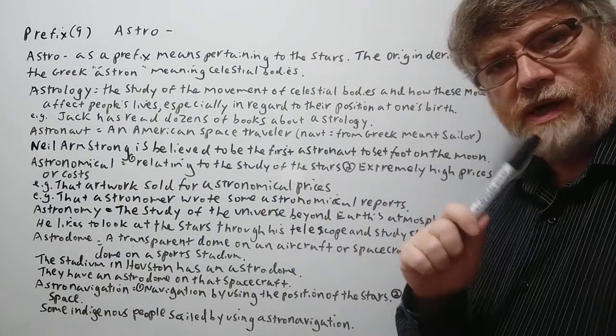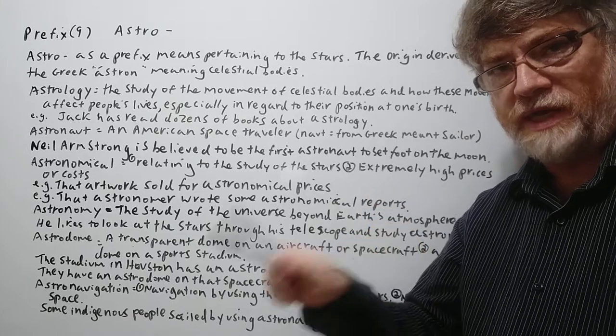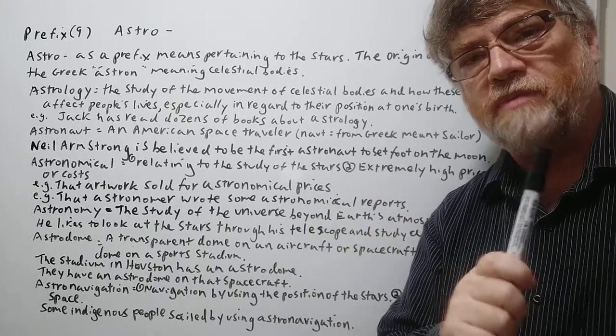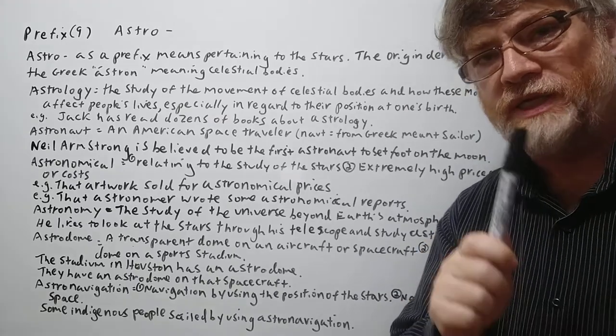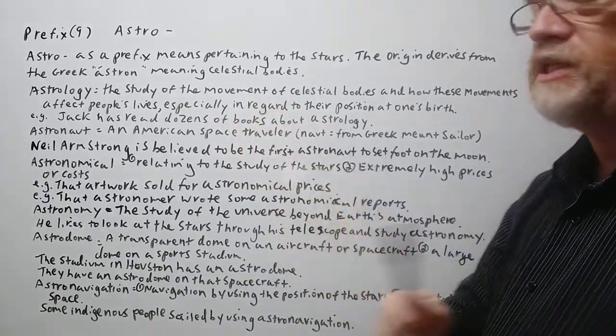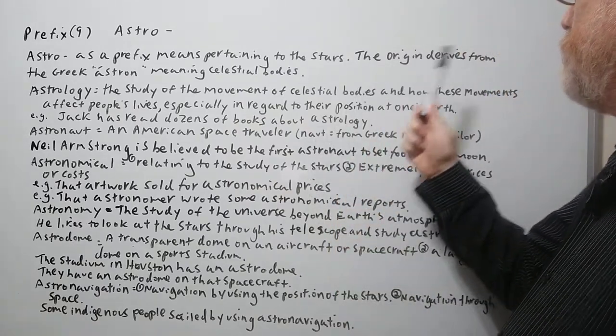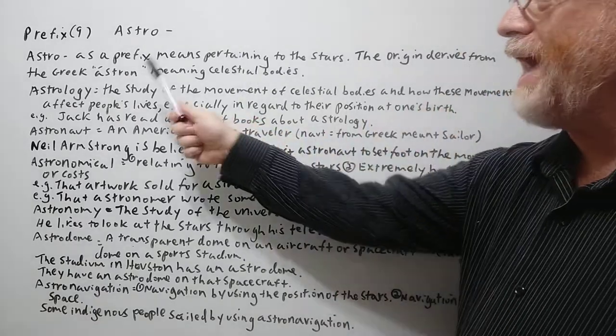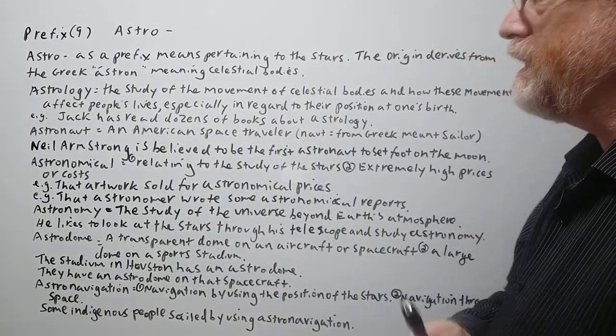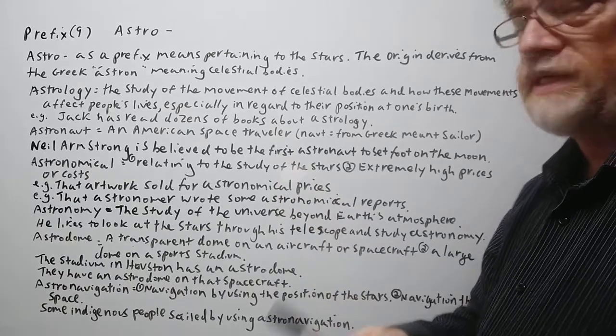Now we're going to cover astro. Astro is a common word beginning and we have a lot of words in English that actually begin astro. We'll probably be covering some of the most common ones in today's lesson. Astro as a prefix means pertaining to the stars. The origin derives from Greek astron meaning celestial body. So that's where we originally got the idea.